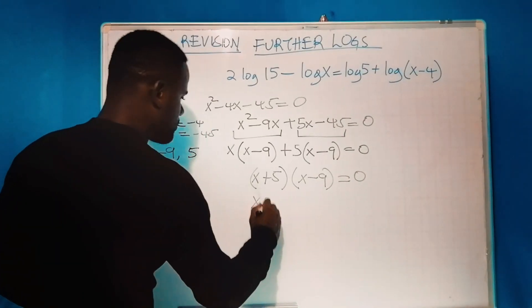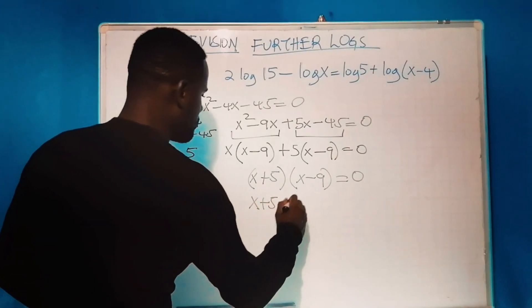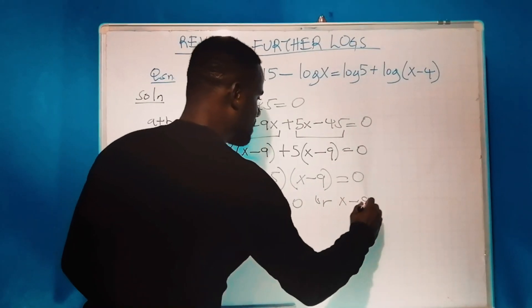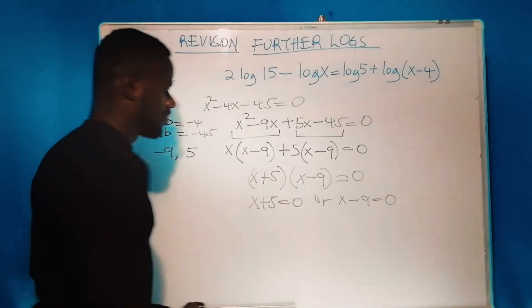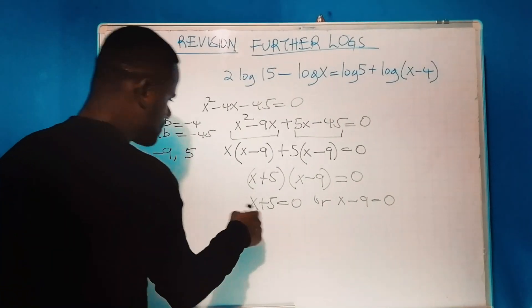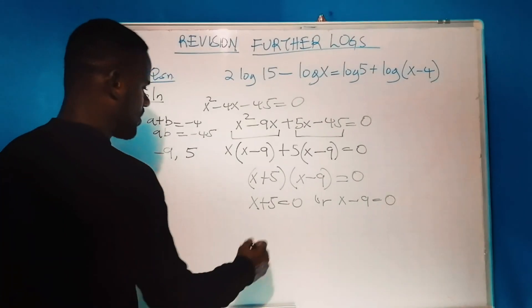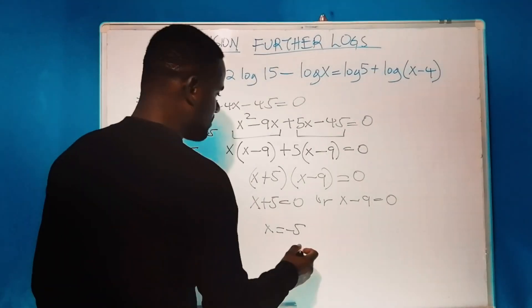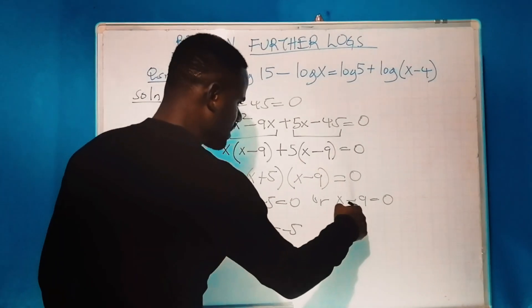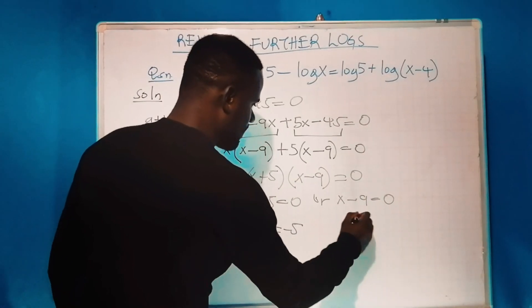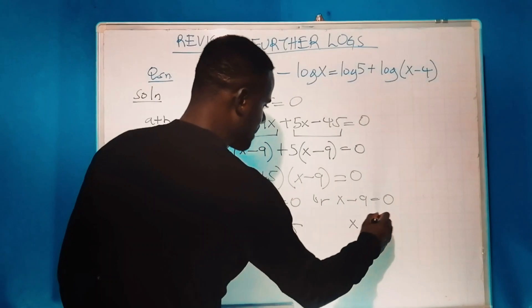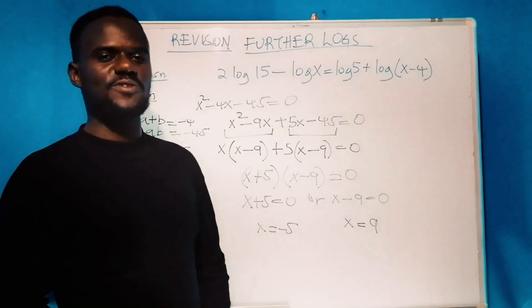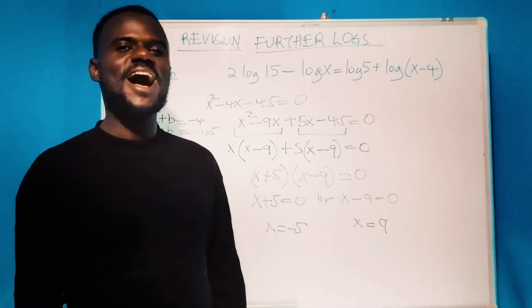Therefore, it's okay to say x + 5 = 0 or x - 9 = 0. If x + 5 = 0, then x = -5. At the same time, if x - 9 = 0, then x = 9. Now we have solved for the values of x in this question.